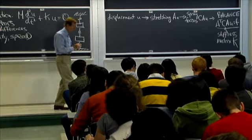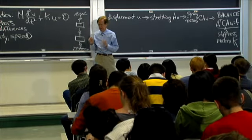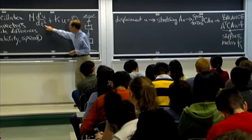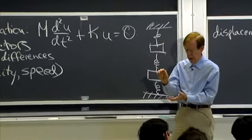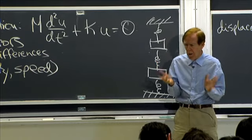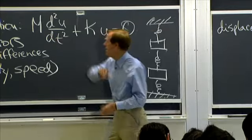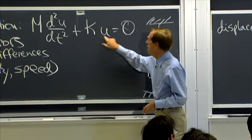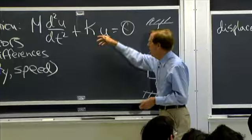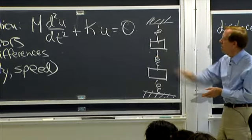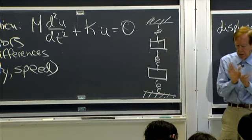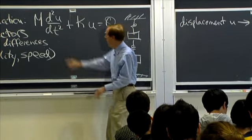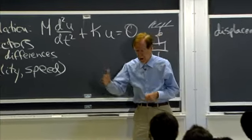We'll be doing other examples of that framework, but I wanted to stay with springs and masses today to do another type of problem — a problem in which time enters, where we're not looking for the steady state. It's Newton's law that comes in: you recognize mass, you recognize acceleration, and the force on the spring is minus ku. So it's a discussion of the important subject of time derivatives and how to solve initial value problems.